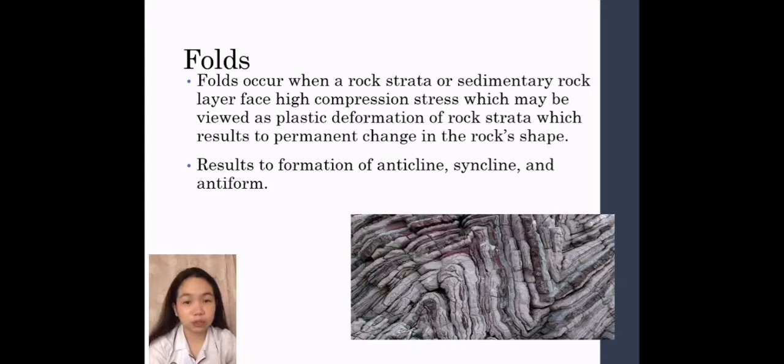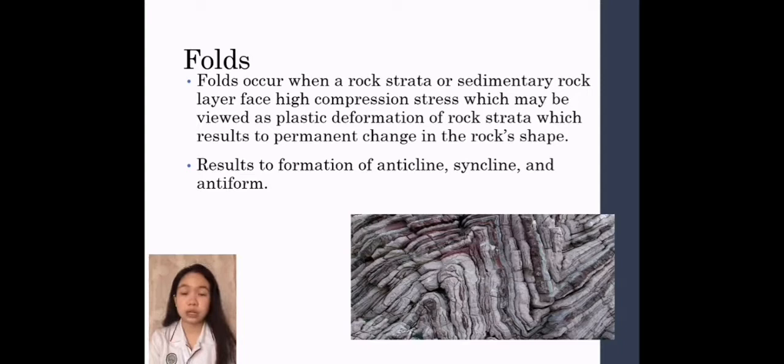Folding may result to anticlines, which are arc-like shaped folds, synclines, which are folds with younger layers closer to the center of the structure, and monoclines, which are folds consisting of two horizontal limbs connected by a shorter inclined limb. Moving on to the fourth classification of folds, symmetrical folds is the one in which the axial plane is vertical. When the axial plane is inclined, it is called asymmetrical fold. Overturned fold is when the beds dip in the same direction on both sides of the axial plane, and recumbent fold is an example of an overturned fold to where the axial plane is horizontal.